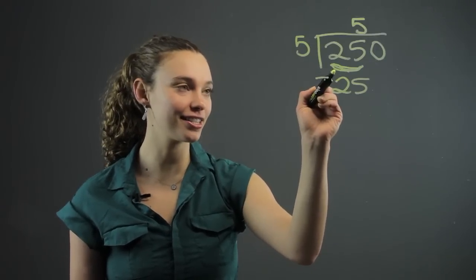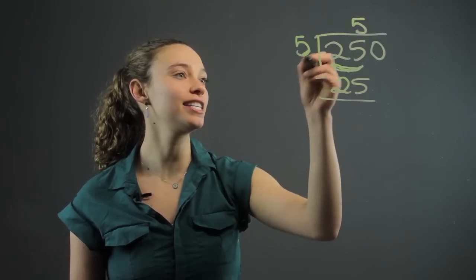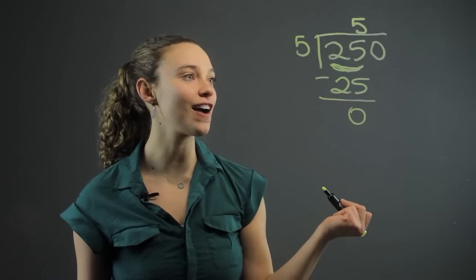Then you subtract. That's the next step. You have to subtract this number that you multiplied to get from this number. Now in this case, it's just 0. 25 minus 25 is 0.